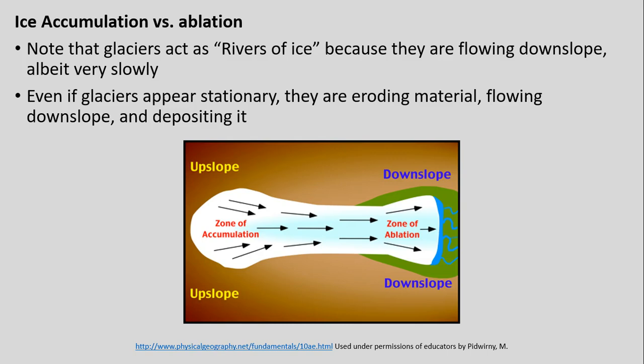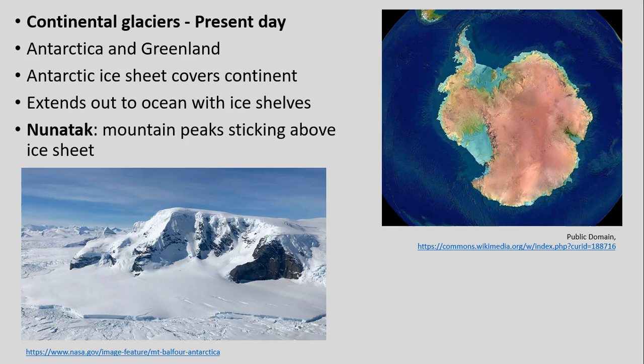Continental glaciers today we only have at the poles — Antarctica and Greenland are the two main examples. Antarctica has the Antarctic ice sheet, which covers the continent but also extends out into parts of the ocean, with extensive ice shelves extending over parts of the ocean as well.